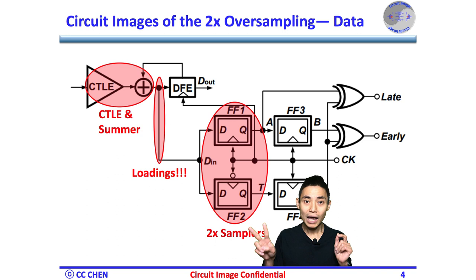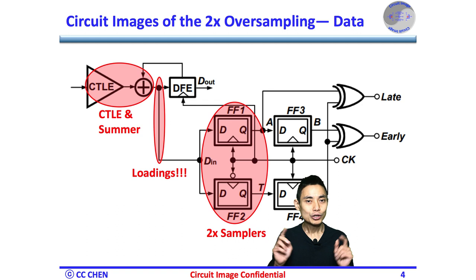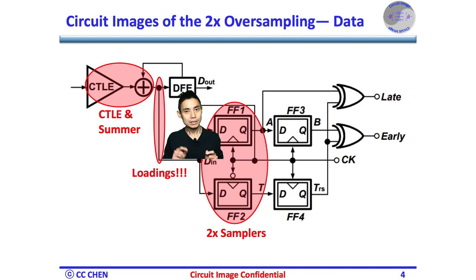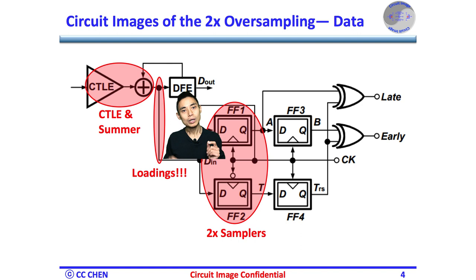The 2x oversampling system implies every circuit is doubled. First, you must have two sets of samplers for the data sample and transition sample. You may not only need twice the power on the samplers, but the sampler's input capacitive loading also limits the bandwidth of the CTLE and the DFE summing amplifier.